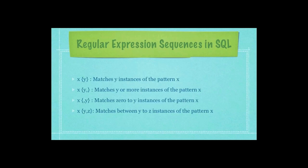We're also looking for a number Y representing instances of pattern X. 'X{Y}' matches exactly Y instances; 'X{Y,}' matches Y or more instances; 'X{0,Y}' matches zero to Y instances; and 'X{Y,Z}' matches between Y and Z instances. A pattern is simply a letter, number, whitespace, or any symbol. For example if Y is 1 and Z is 3, we'd find between 1 to 3 of whatever symbols are in X.